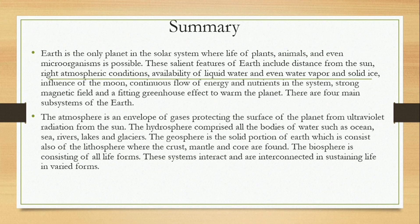As a summary, Earth is the only planet in the solar system where life of plants, animals, and even microorganisms is possible. These important features of Earth include distance from the sun, right atmospheric conditions, availability of liquid water, even water vapor, and solid ice.